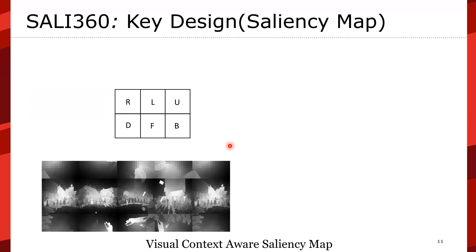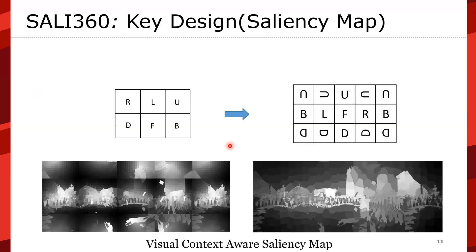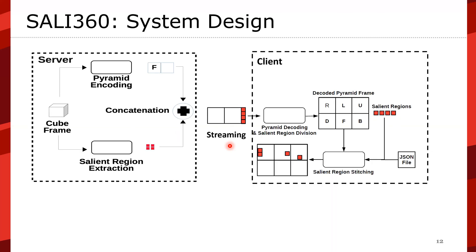This is an example of cube map-based saliency. In the SALI360 system, we reassemble the contents into proper visual context to extract the saliency map more precisely and accurately. Starting from the cube map, which is encoded to the pyramid saving 80% of content size, we reassemble the contents into a larger visual context and extract saliency patches. Then, based on the network environment — if the network state is good, it patches more saliency regions; if not, it patches fewer.